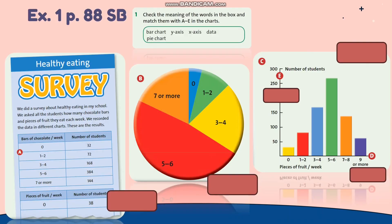Let's do exercise 1, page 88 of the student's book. The task is to check the meaning of the words in the box and match them with A to E in the charts.